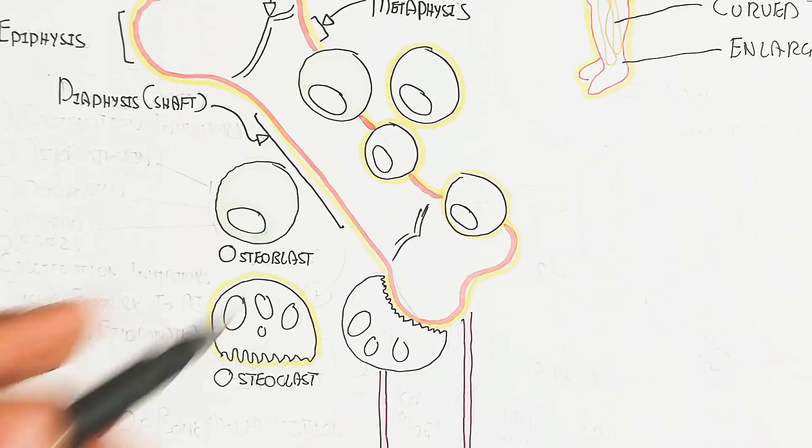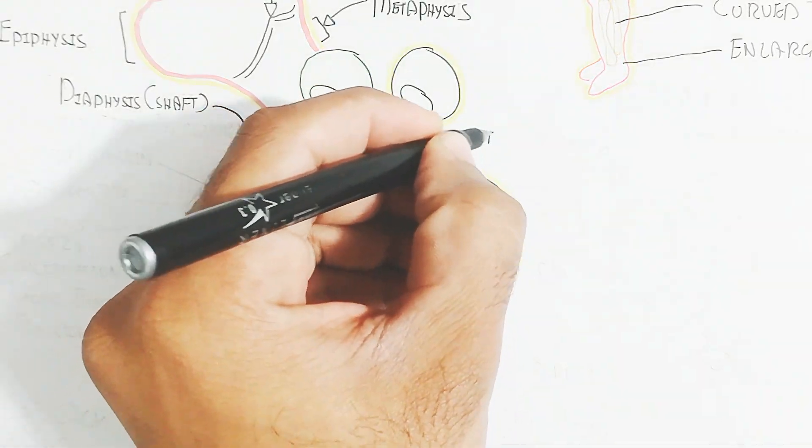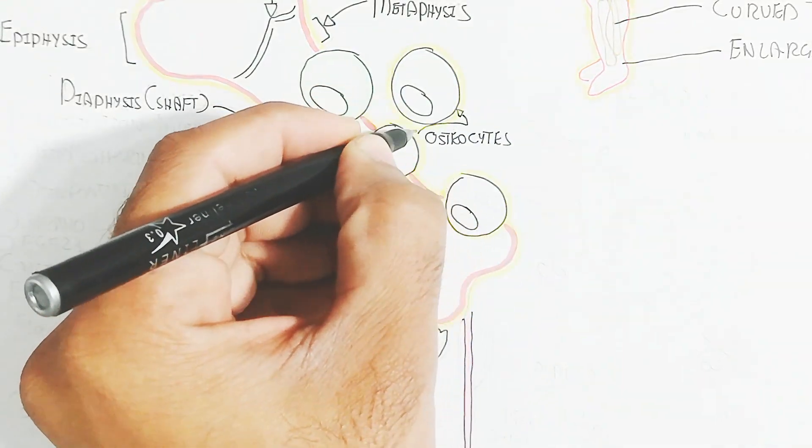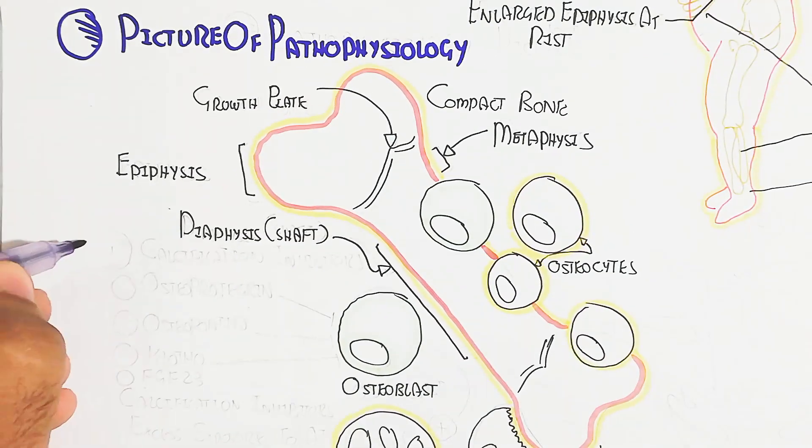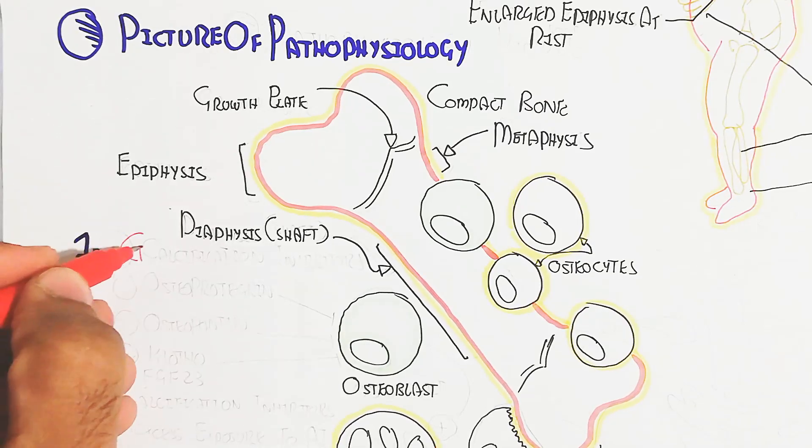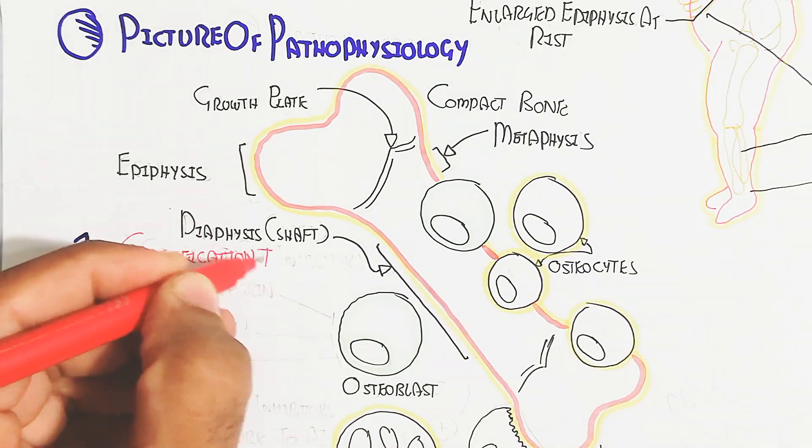Anyway, the osteoblast is the bone forming cell, while the osteoclast is the bone dissolving cell. And the osteocyte is the bone maturing cell from the osteoblast, maturing to the osteocyte as a part of the bone.